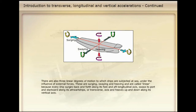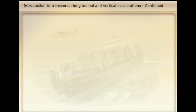There are also three linear degrees of motion to which ships are subjected at sea, under the influence of external forces. These are surging, swaying, and heaving, and are called linear because every ship surges back and forth along its fore and aft longitudinal axis, sways to port and starboard along its athwartships or transverse axis, and heaves up and down along its vertical axis.